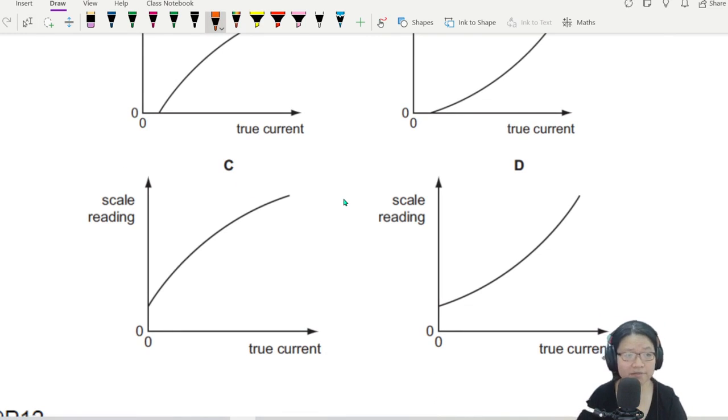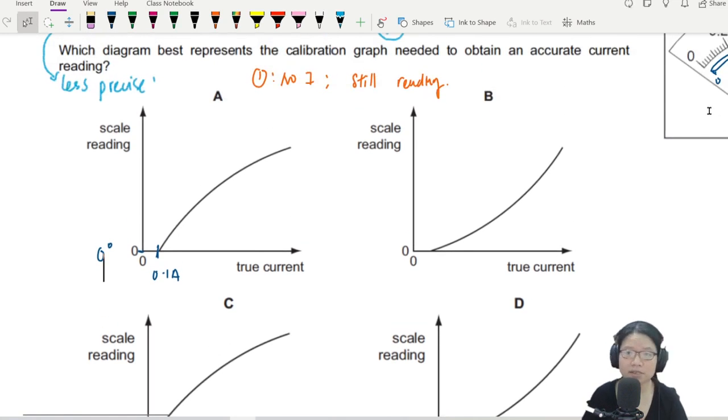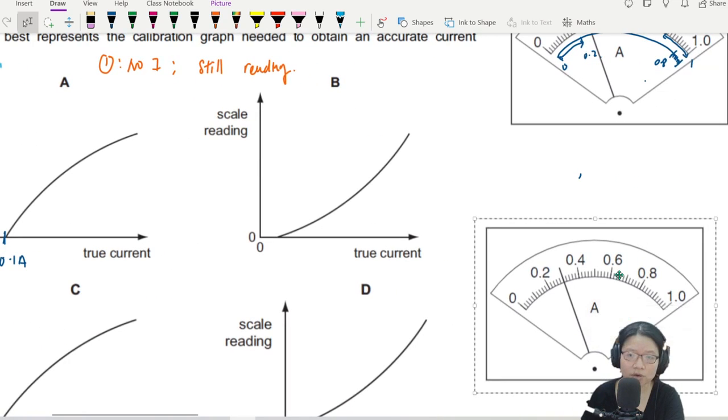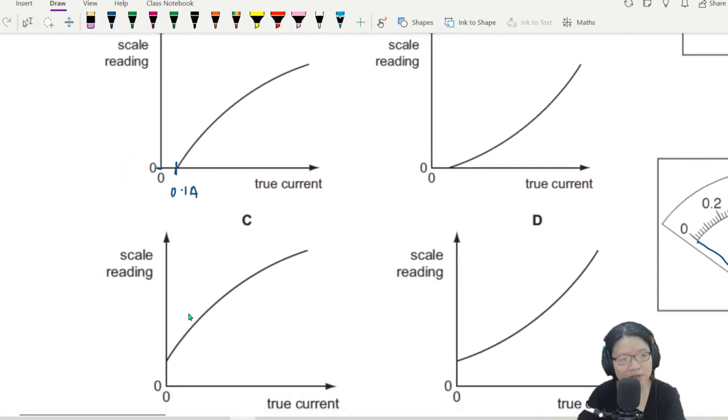So see here. Let's say we look at this graph. It is the graph of scale reading against true current. So how to read the graph? For example, when the current is, let's say this is 0.1 ampere, your scale reading is 0 degrees. Meaning to say, this meter, the meter that we are talking about right now, when there's current, this reading is still 0. It cannot be right. Scale reading cannot be 0. So this kind of reading is out. When the current is 0, scale reading is not 0. So this 2 is automatically out already.